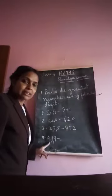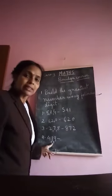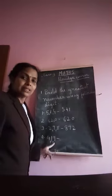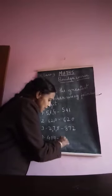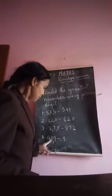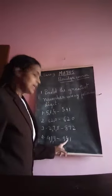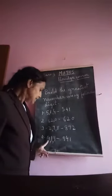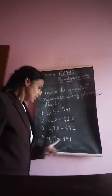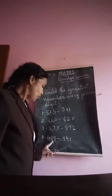For digits 4, 1, and 9: you have to build the greatest number. Write the biggest digit first — that is 9, then 4, then 1. So 941 is the greatest number built using digits 4, 1, and 9. This is the biggest number we can build using digit 419.